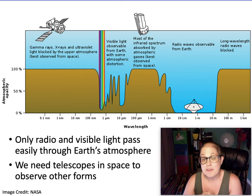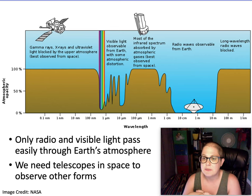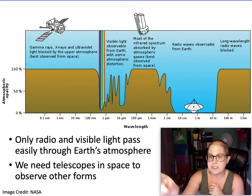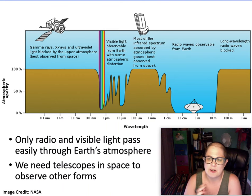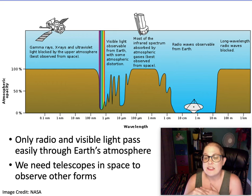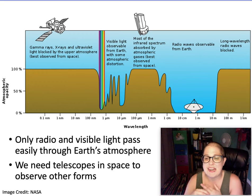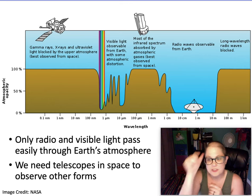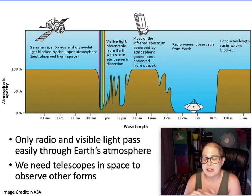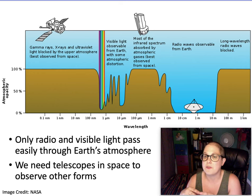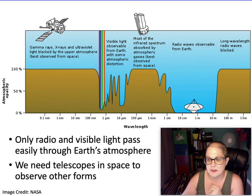Infrared is partly absorbed — some parts are completely blocked by the atmosphere. The mid- to far-infrared gets absorbed so you need a space telescope to see that. However, for some parts of the infrared spectrum there are windows where you can see through from Earth. You can observe some types of infrared from the ground, and you do your best infrared observations from a high-altitude, dry location.